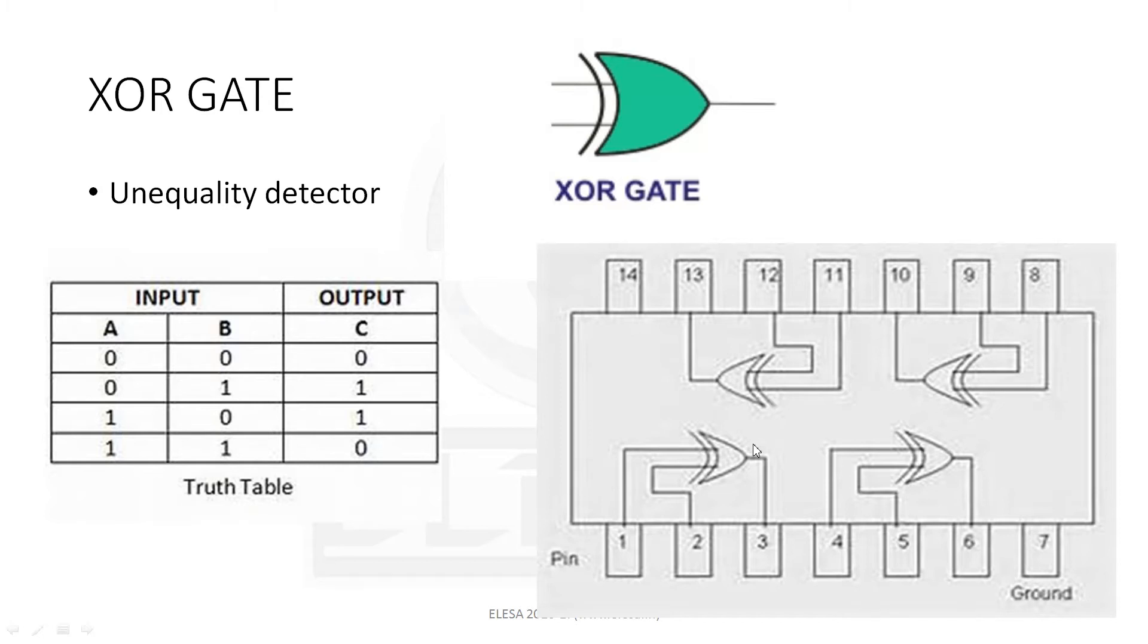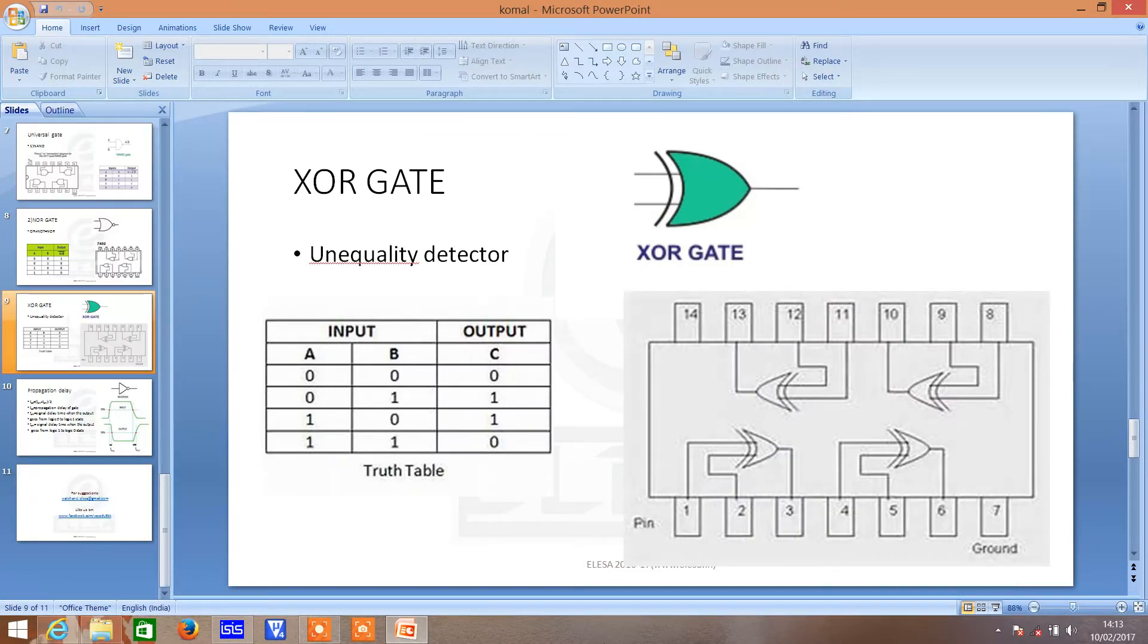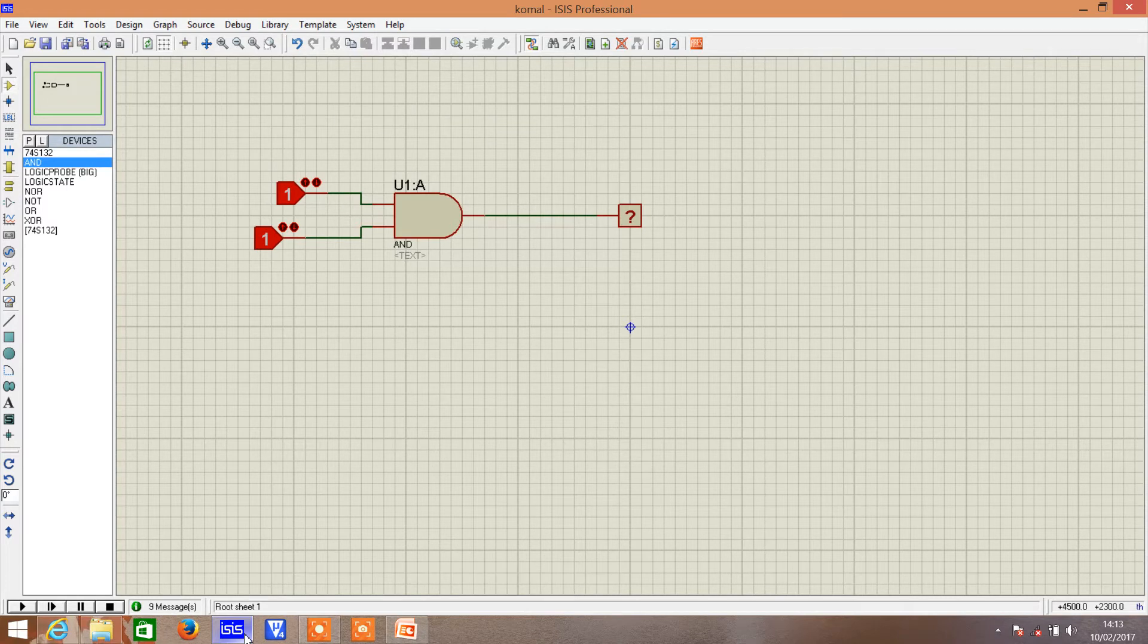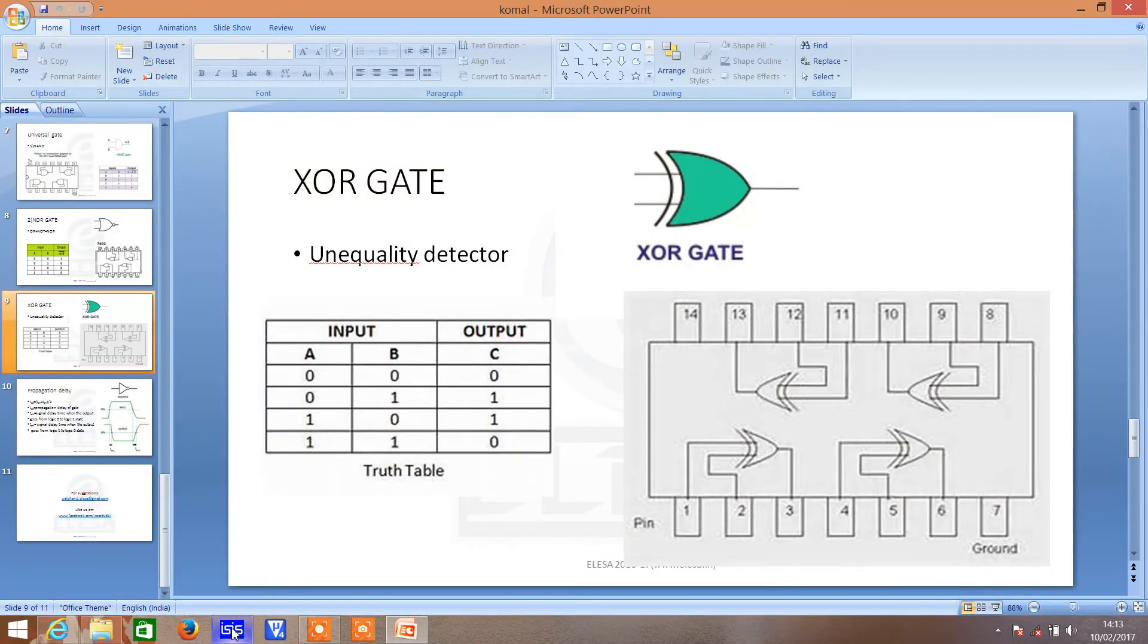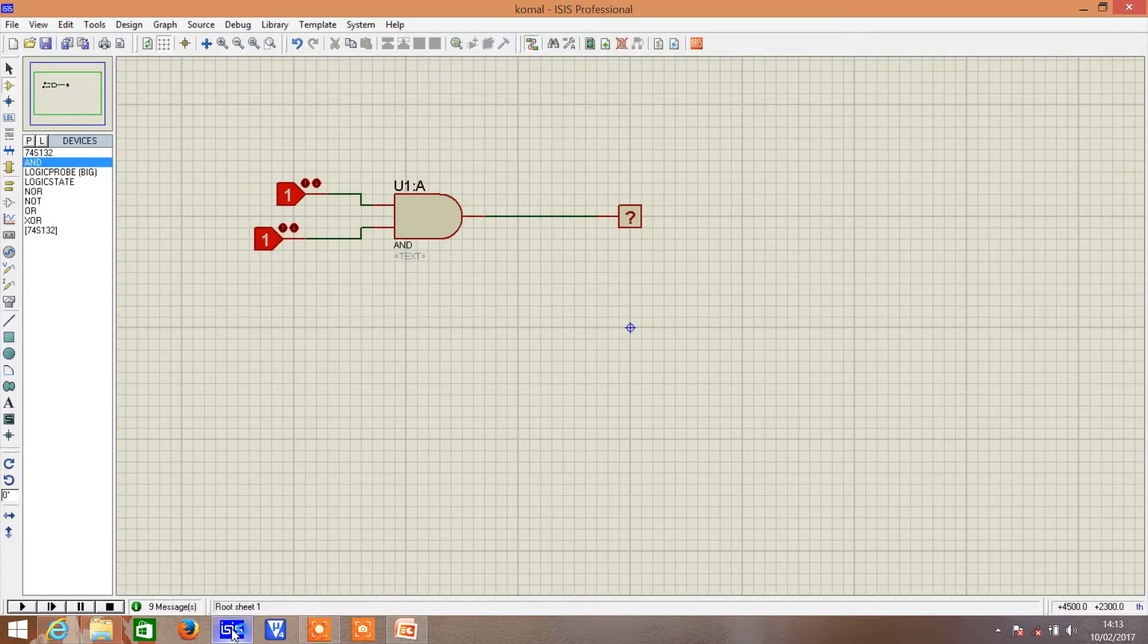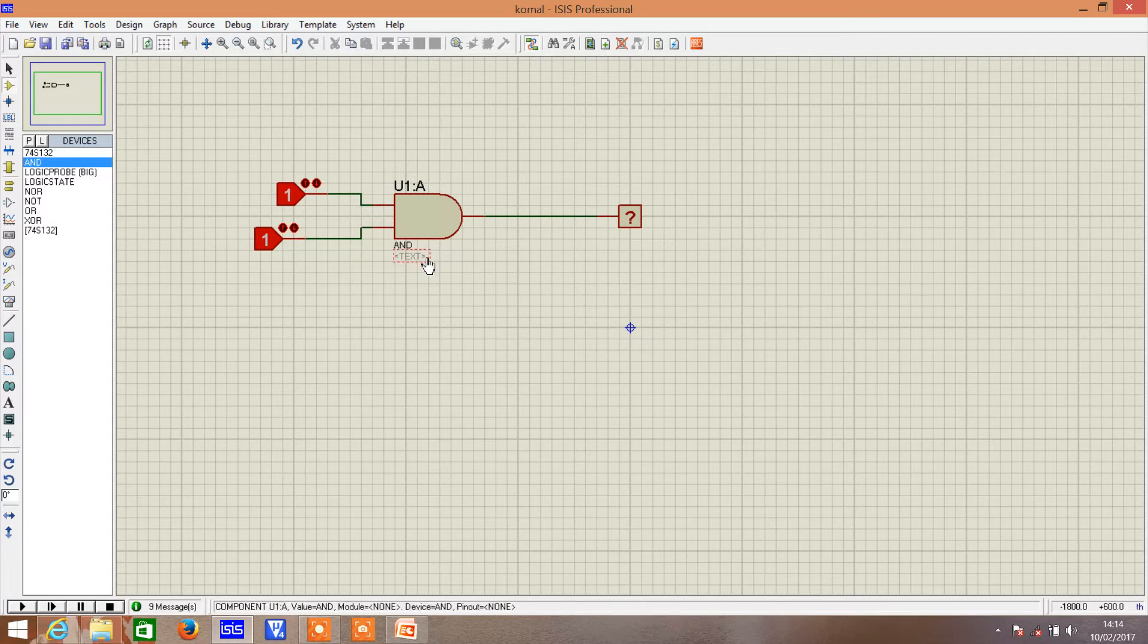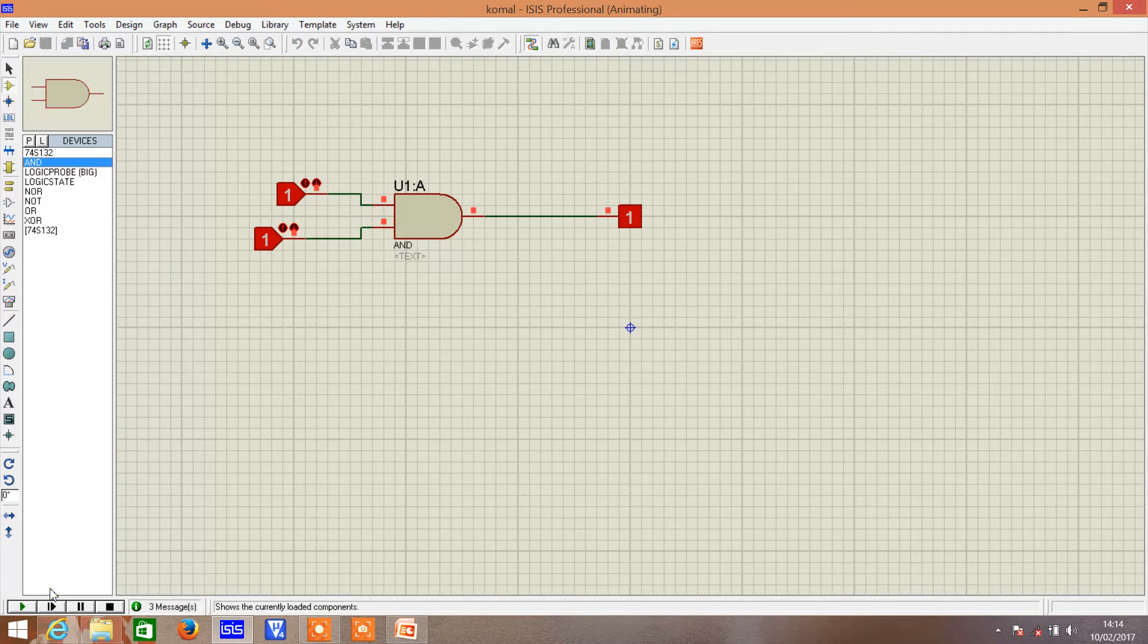Now, we see how actually this gate works by using Proteus software. In this software, we use logic state for input and logic probe for output. Here, we use AND gate. This is input, that is 1, 1 we give for AND gate. Then what will be the output? It must be 1. So, we can simulate now. So, we get output 1.